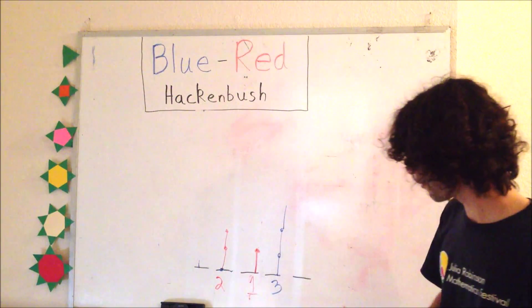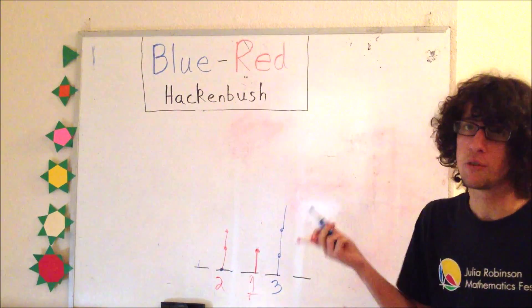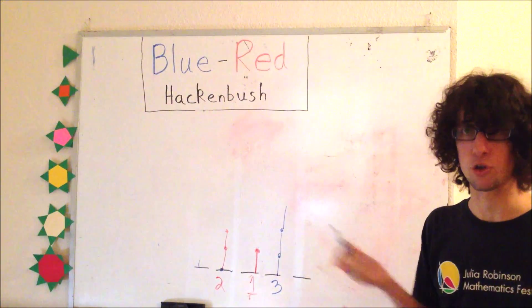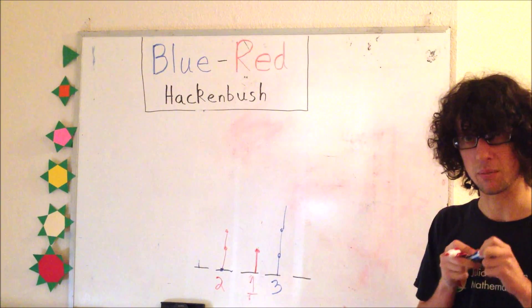I have three for red here and three for blue here. If you play it out, you'll see that whoever goes first is going to lose. And that is what we mean by zero.